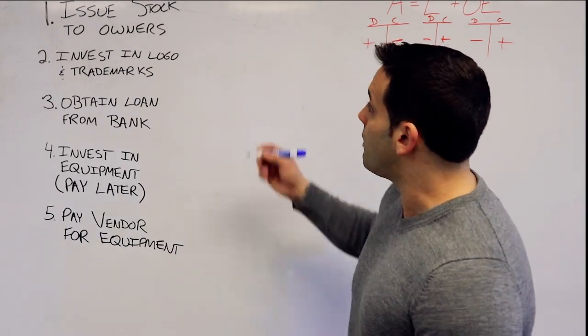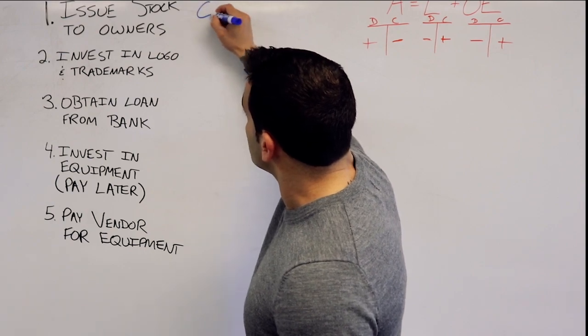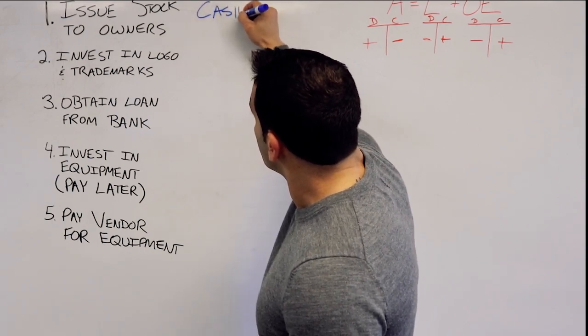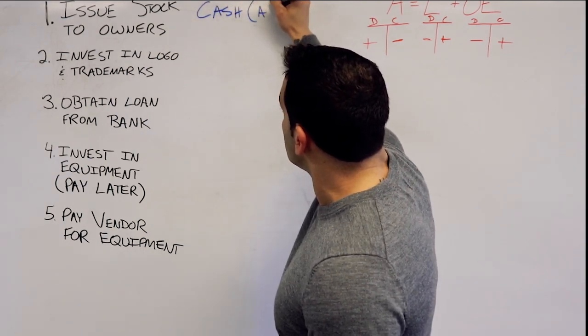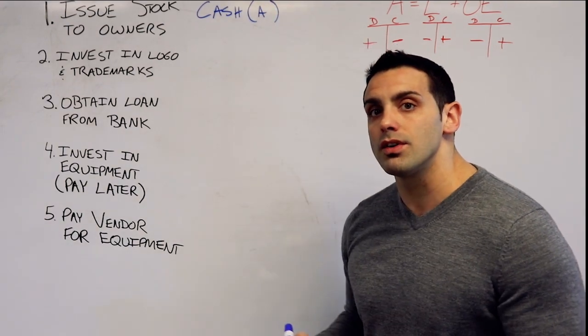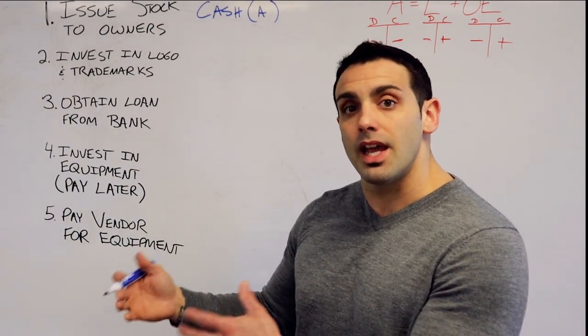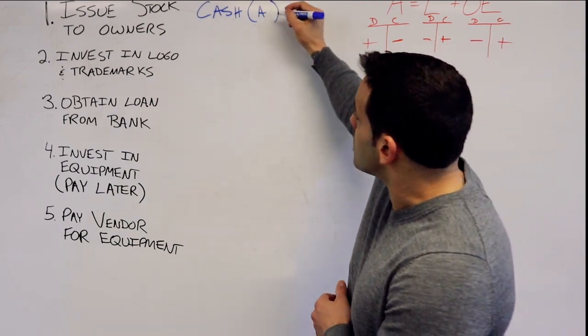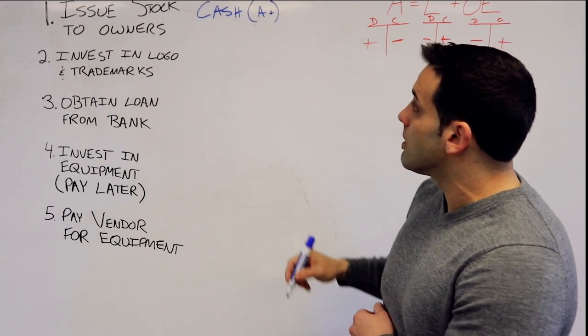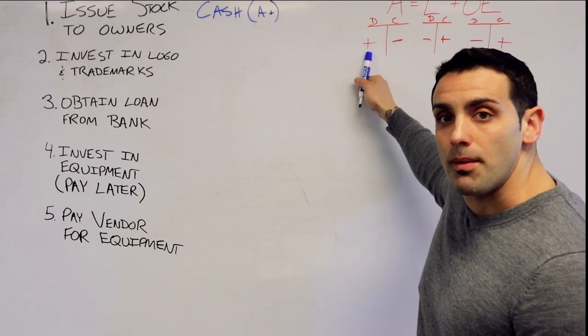So what we have here is we're going to have our cash. And this, of course, is an asset. So if the owners are giving the business cash, the cash is increasing. So this is going to be our debit.